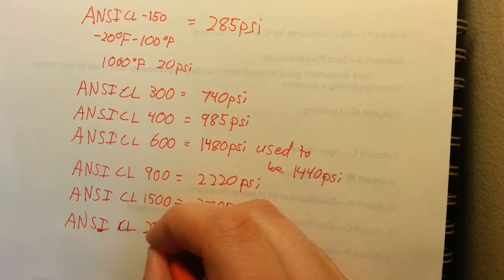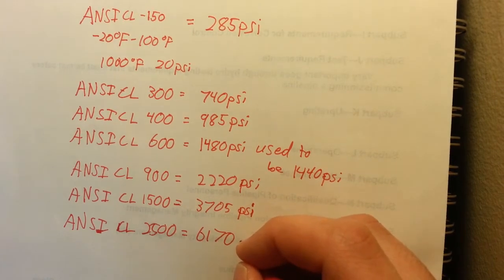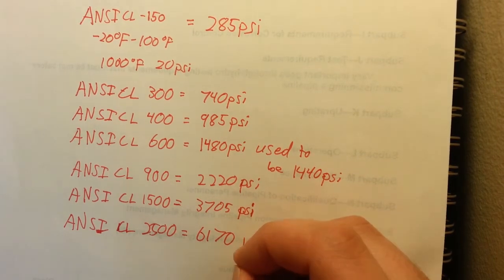The highest one, ANSI class 2500, is good to 6170 PSI.